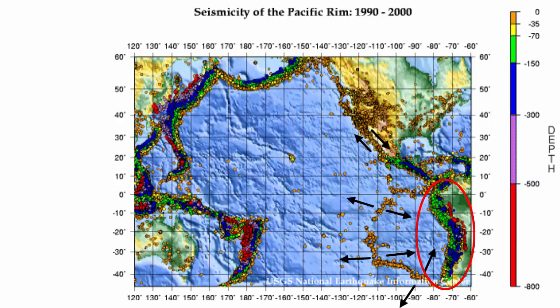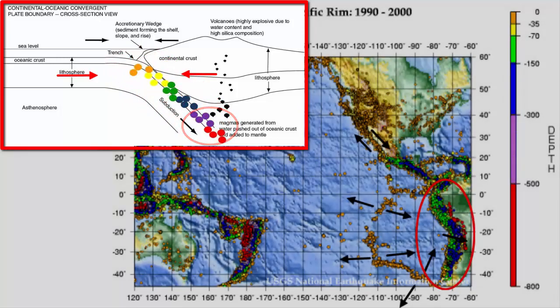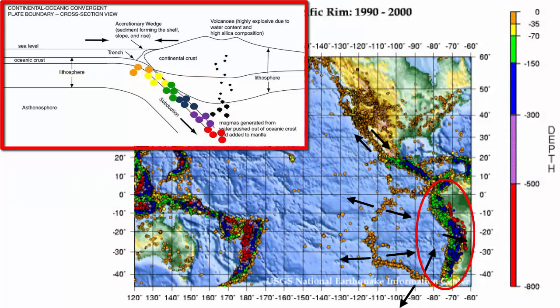Why? As the ocean plate subducts under South America, it descends to deeper and deeper depths. The shallowest frictional sticking and consequent release will happen at the top of the subduction zone. Further down in the subduction zone, you'd expect deeper sticking and deeper quakes. So these color-coded earthquake maps act like an x-ray, giving us an image of the depth of the subducting plate at various distances from the subduction zone itself. We can see the plate subducting under South America.